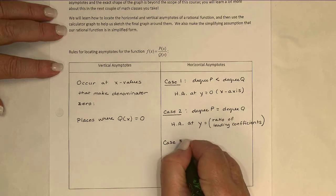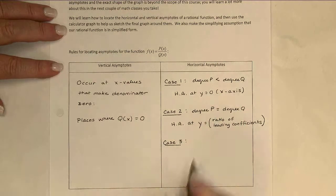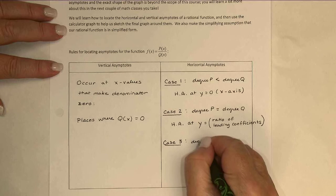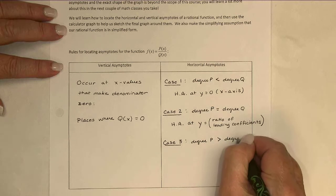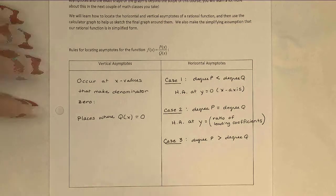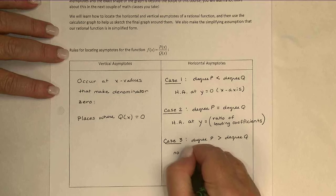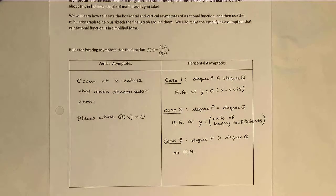The third and last case is what happens if the degree on the top is bigger than the degree on the bottom. So the degree of p is larger than the degree of q. And when that happens, there actually are no horizontal asymptotes. So everything depends on the degree of the top and bottom when we're thinking horizontal asymptotes. Let's look at a few examples of problems like these.